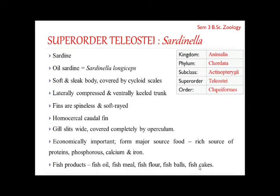This oil sardine is common along the coasts of Somali, Seychelles, Pakistan, India, Malaysia, Indonesia, Vietnam, and along the Gulf of Oman and Andaman Sea.